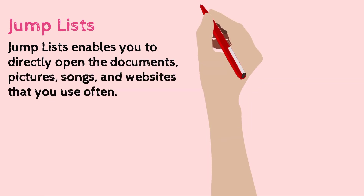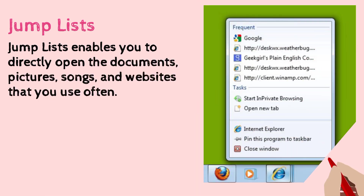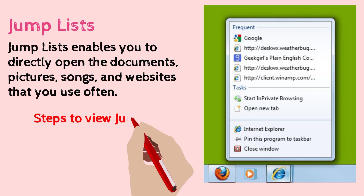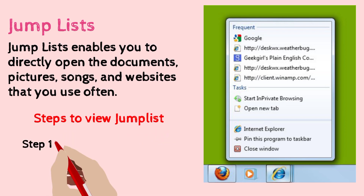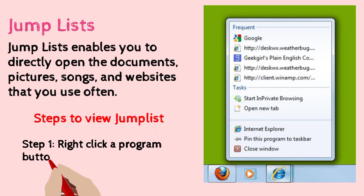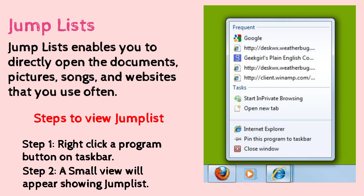To view the jump list, follow these steps: first, right-click on the program button of the taskbar, and then a small view will appear to show the jump list.